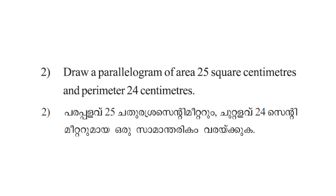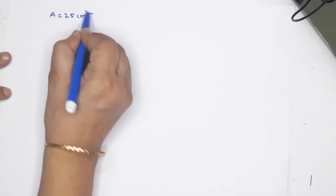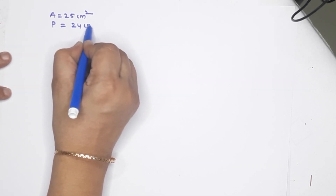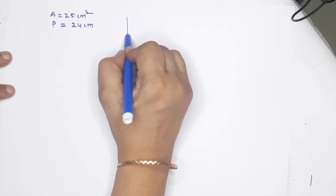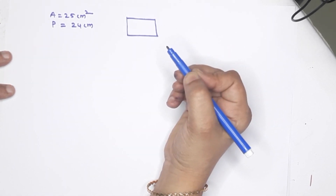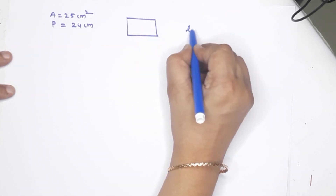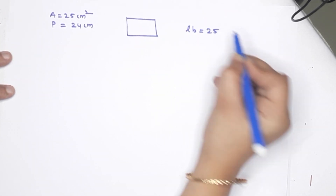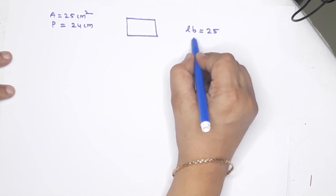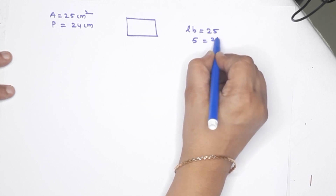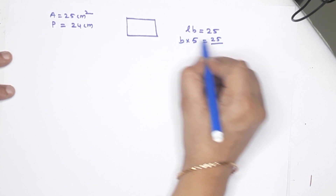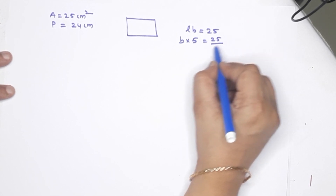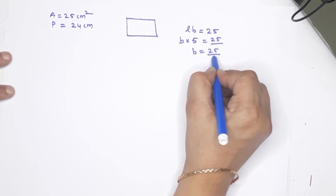Draw a parallelogram of area 25 square centimeters and perimeter 24 centimeters. We have to draw a parallelogram of area 25 cm² and perimeter 24 centimeters. Then I have to draw a rectangle. Area 25 cm² — how do I draw a rectangle? Length and breadth. The length is 5. Then the width is 25 by 5, which is 5. That is equal to 5.